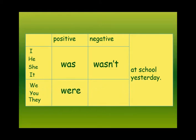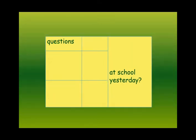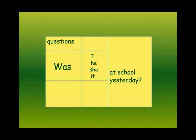We, you, they take 'were', and in negative form they take 'weren't'. In questions, we start with 'was' then I, he, she, it as the subject. For another question, start with 'were', then we, you, they.